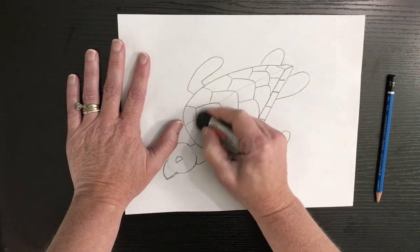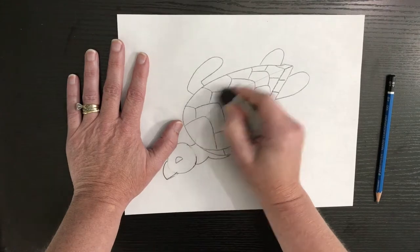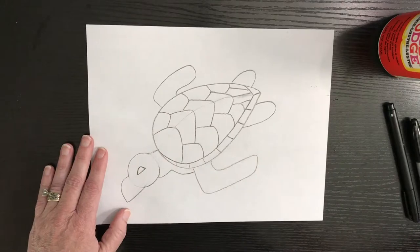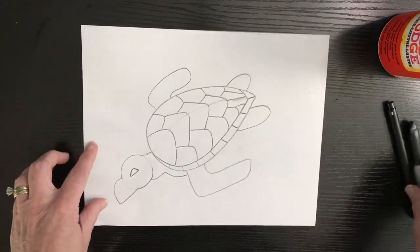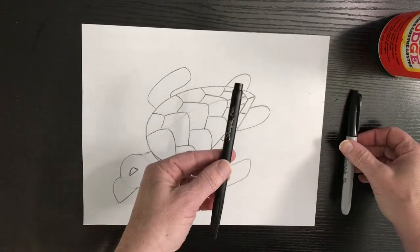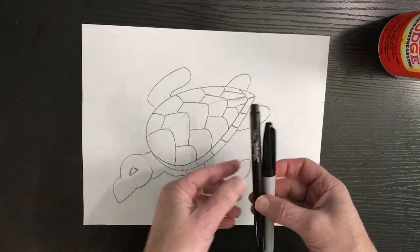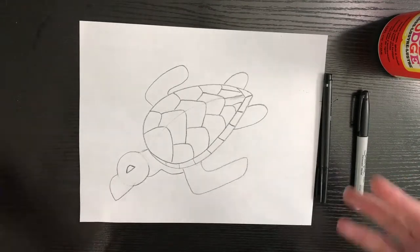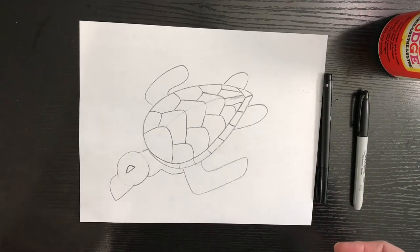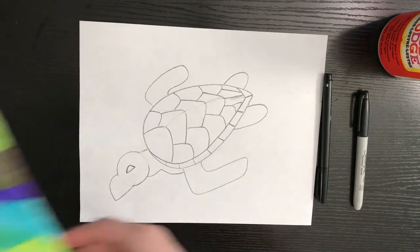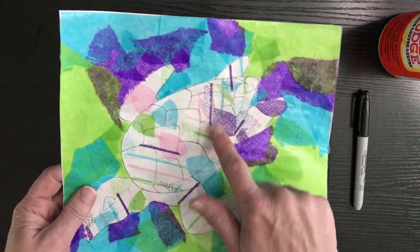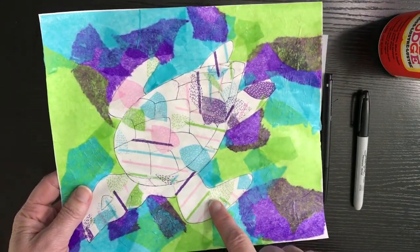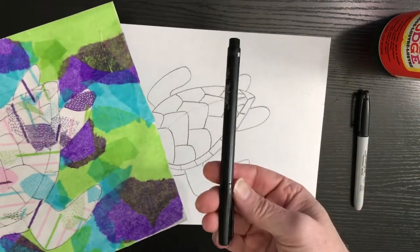Once we have this, you're going to outline it using either a thin sharpie or a thick sharpie depending on what textures or what patterns you want to use on your turtle. So since I did this lighter pattern that you can see through pretty easily with my tissue, I used a thinner sharpie.